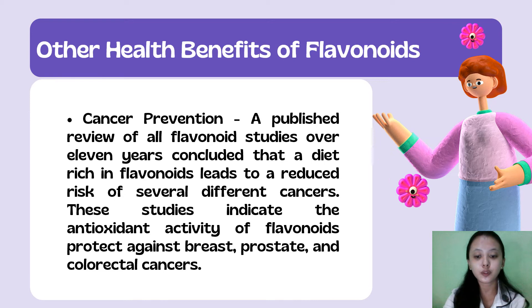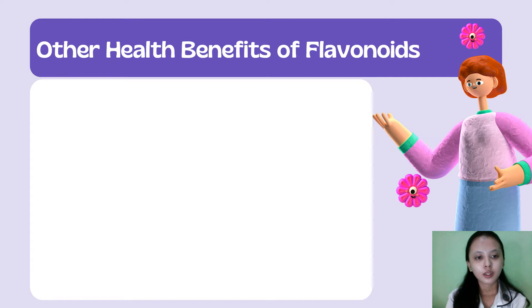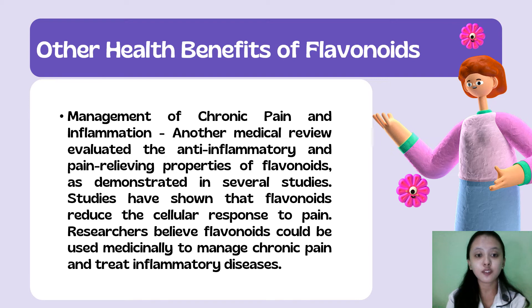Therefore, it is best to consume various plant food sources to obtain different flavonoid subtypes. The next benefit is management of chronic pain and inflammation. A medical review evaluated the anti-inflammatory and pain-relieving properties of flavonoids. Studies have shown that flavonoids reduce the cellular response to pain. Researchers believe flavonoids could be used medically to manage chronic pain and treat inflammatory diseases.